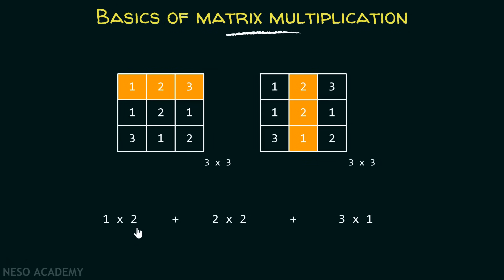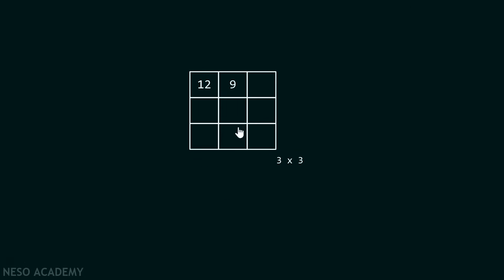1 × 2 is 2. 2 × 2 is 4. 3 × 1 is 3. 3 plus 4 is 7. 7 plus 2 is 9. Therefore, the final result is 9, which will get stored in this location.